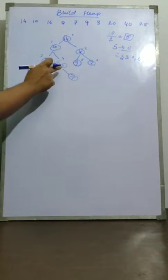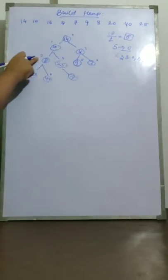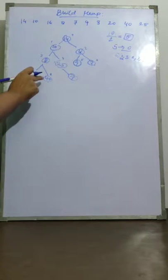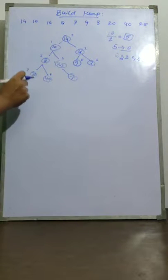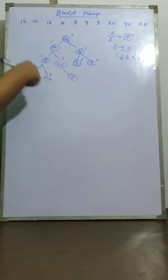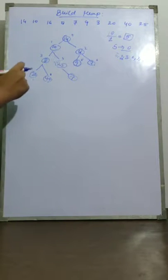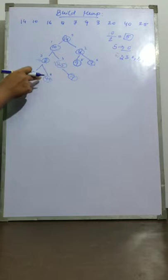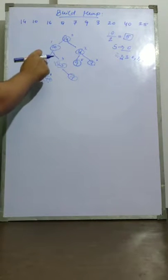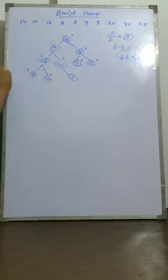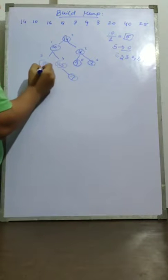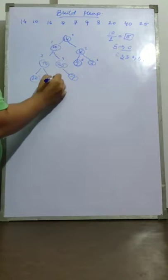Now I reach index 3. I check: is 8 a max heap? No, because both 40 and 20 are greater than 8. I need to swap 8 with the maximum child, which is 40, not 20 — because if I replaced with 20, it still wouldn't be a max heap. So I swap 40 and 8, giving 40, 20, and 8. Now this is a max heap.